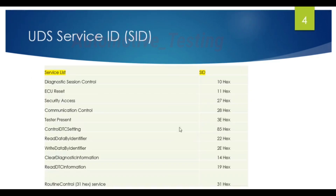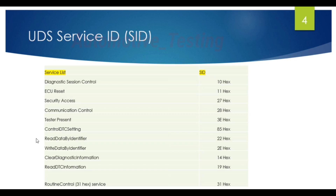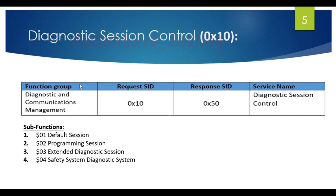Next is the UDS service ID. We can also call it service name and service ID. You can think of the service name like a company name and the service ID like an employee ID. In this video I am only focusing on diagnostic session control. There are many services in the service list — you can see ECU reset, security access, tester present, communication control. Tester present I have already covered in another video; I will provide the link in the description. In upcoming videos I will explain all services in this UDS series.